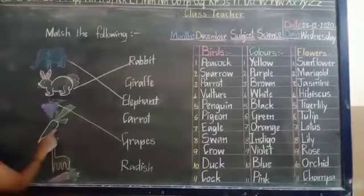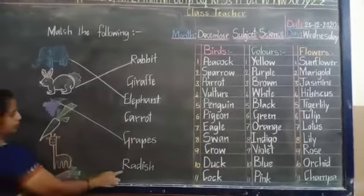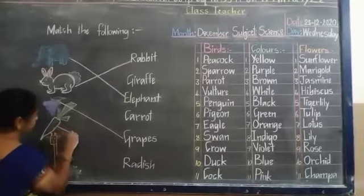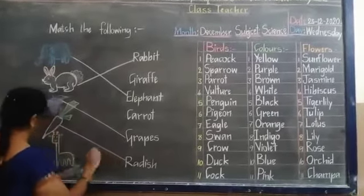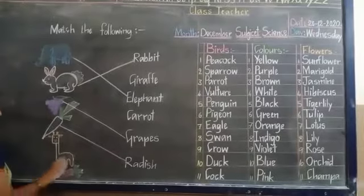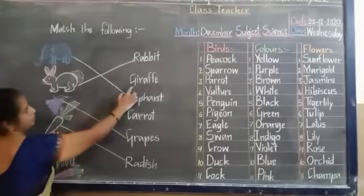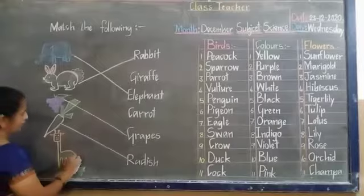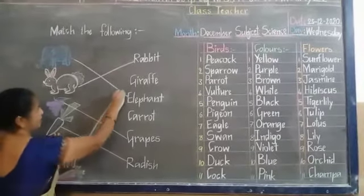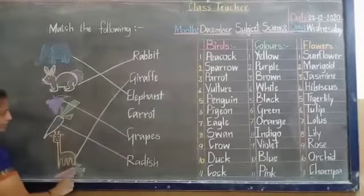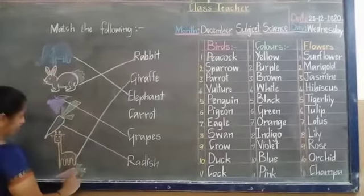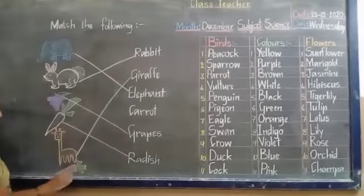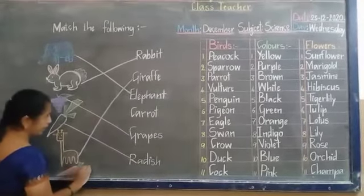Next comes radish. R-A-D-I-S-H. Radish. Then giraffe. G-I-R-A-F-F-E. Giraffe. Then carrot. C-A-R-R-O-T. Carrot.